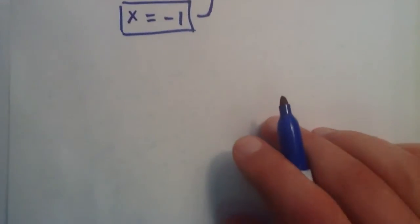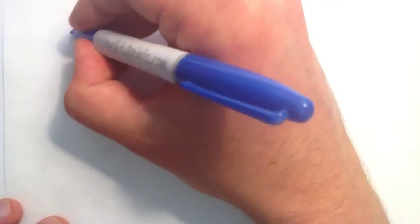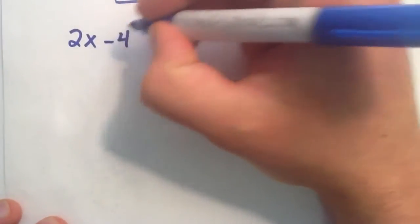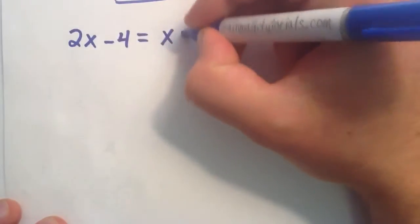So, that means that this is the correct solution to this expression. So, let's go ahead and do a second example here. Let's do 2x minus 4 equals x plus 6.